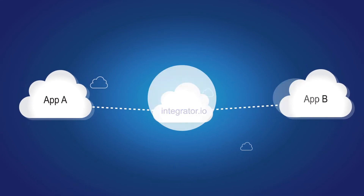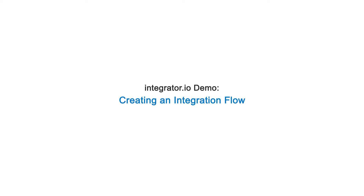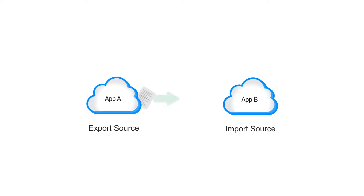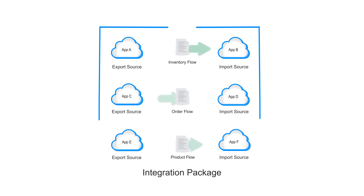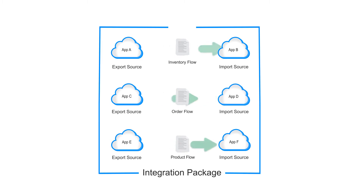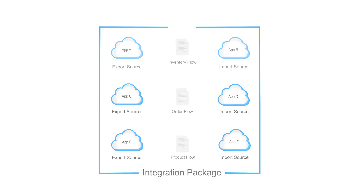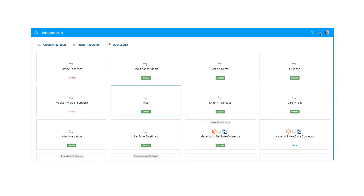This video shows how easy it is to create an integration flow with Integrator I.O. A flow eliminates a manual process by automating the exchange of data from one application to another. A flow can be used individually or else grouped with other flows into an integration package. An integration is displayed as a tile in the Integrator I.O. dashboard.